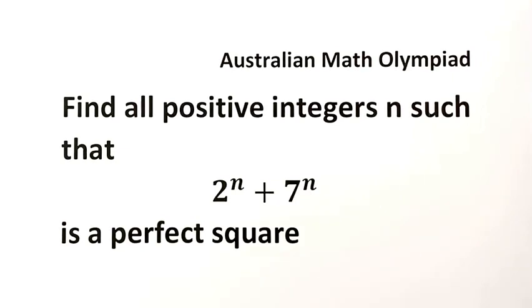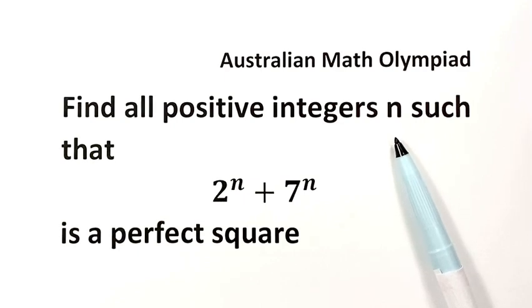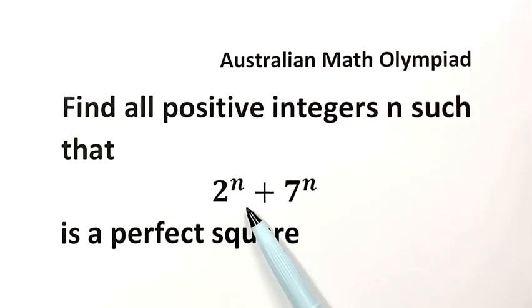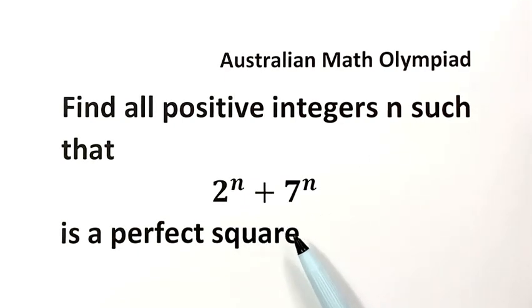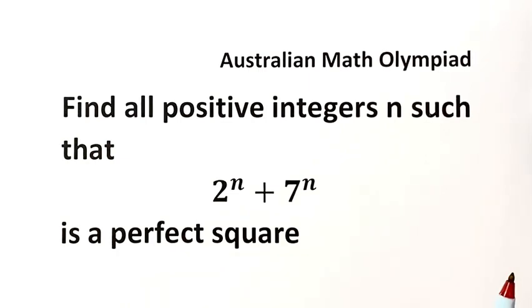In this video, we can solve this question: find all positive integers n such that 2 to the power n plus 7 to the power n is a perfect square. This question is from the Australian Maths Olympiad.